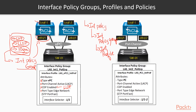This is the way that we configure an interface in ACI. Once we configure those attributes, we then assign, on the profile, the interface that we're going to be applying those particular parameters.